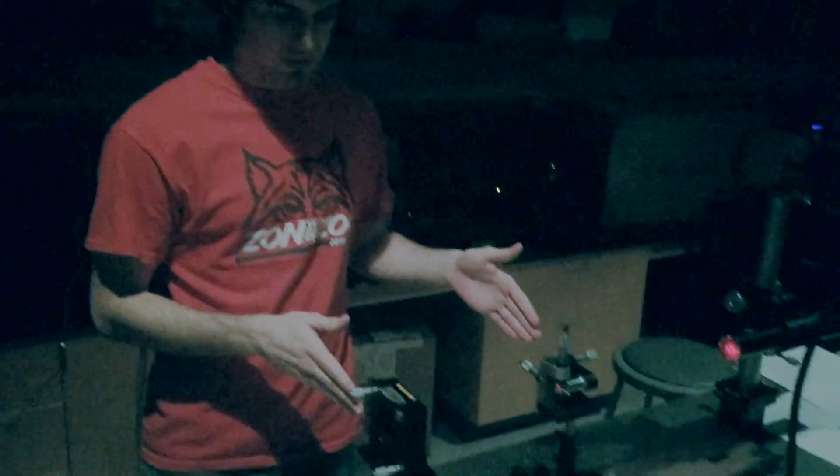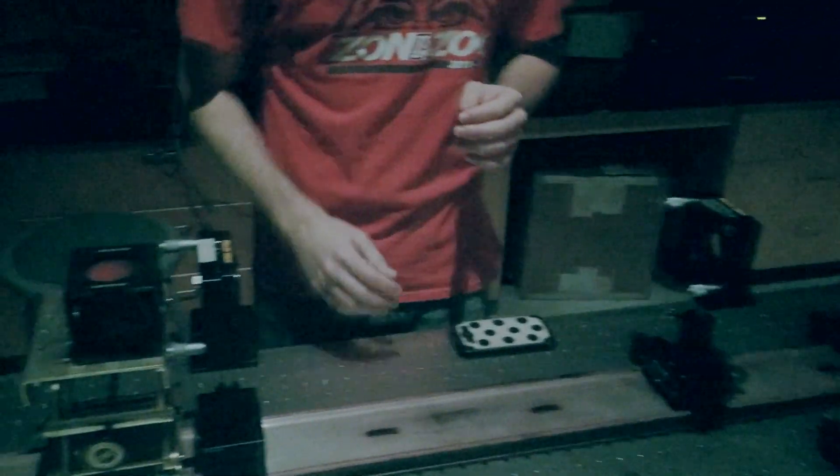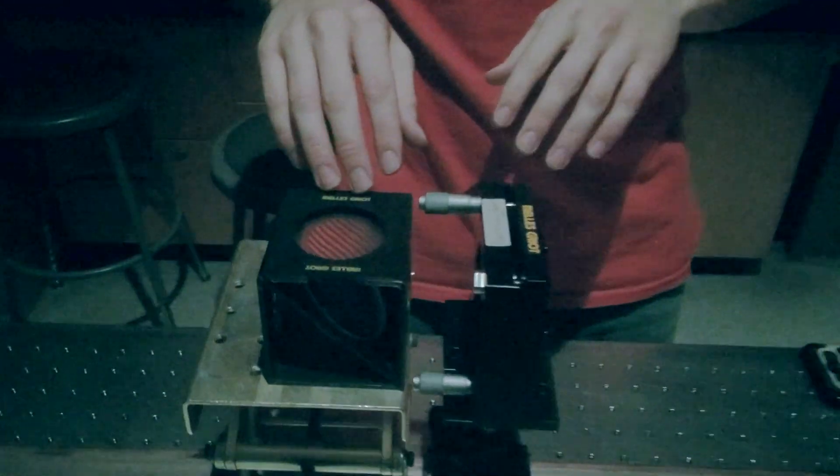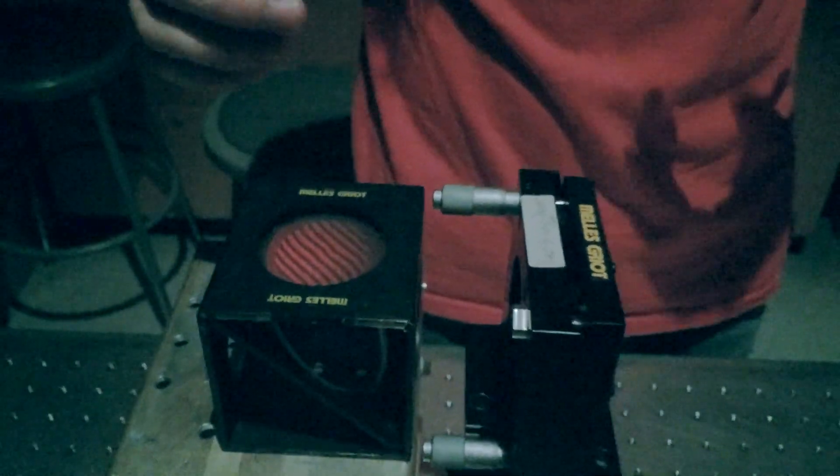So now that we have our Keplerian beam expander set up, and we're filling this lens very well, what we can do now is use our shear plate to start testing elements for their focal length or radius of curvature for the case of a mirror.